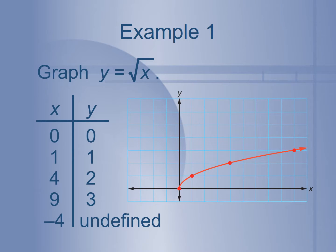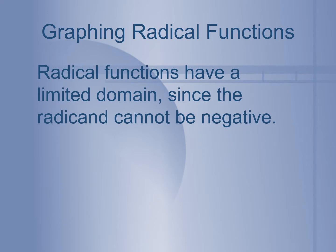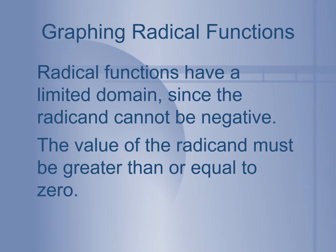Here are the points that I could plot, and notice it will continue going this way, which is why there's an arrow. This is what the parent function for a radical function looks like. Notice that there's a limitation on my domain — the radicand cannot be negative. So in order to figure out what our domain is, we have to set the value of the radicand greater than or equal to 0, and then solve for x.